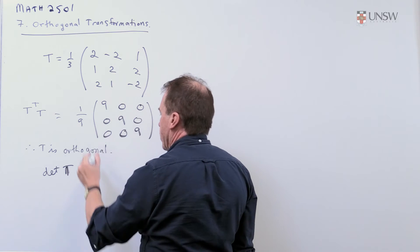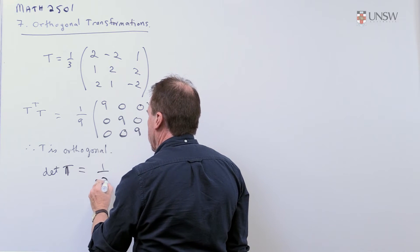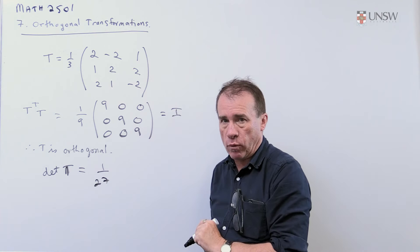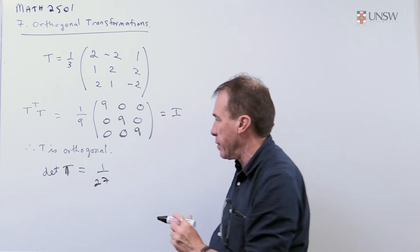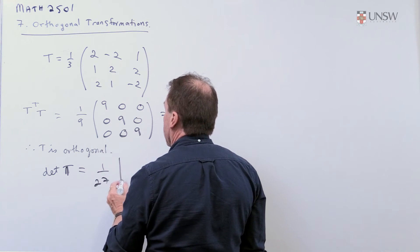So when I take it out of the determinant, I'm going to get a 1 over 27. I'll get a one-third for each of the rows. So be careful with that. Times the determinant of what's left.